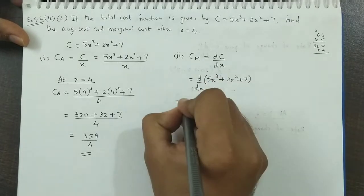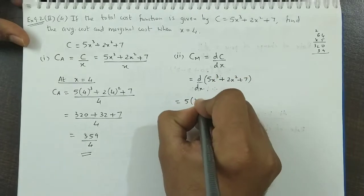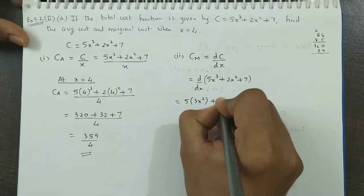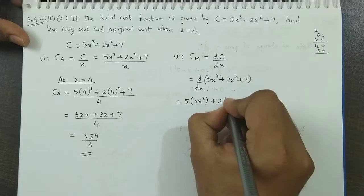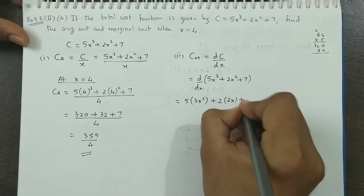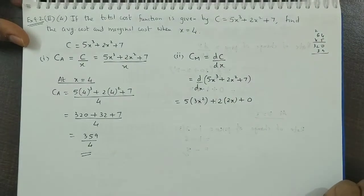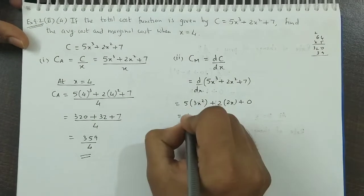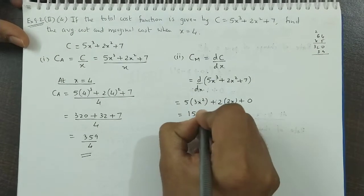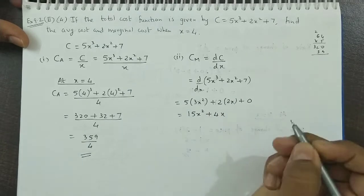Now 5 coefficient is as it is. x³ derivative is 3x². 2 is the coefficient. x² derivative is 2x. And 7 derivative is 0 which is a constant. So 5, 3 is here. This is 15x² + 4x.